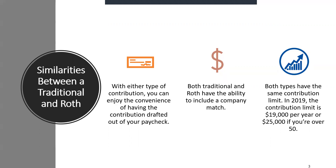With a Roth IRA, the contribution limit is dependent on your income level, so there are a lot more restrictions on a Roth IRA. But within a 401k account, whether you're doing Roth or traditional, your income does not matter for that contribution limit.